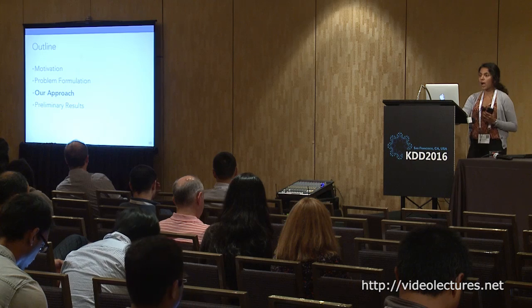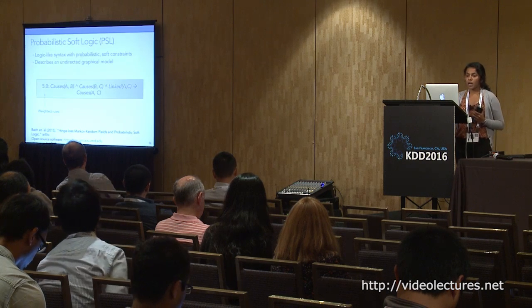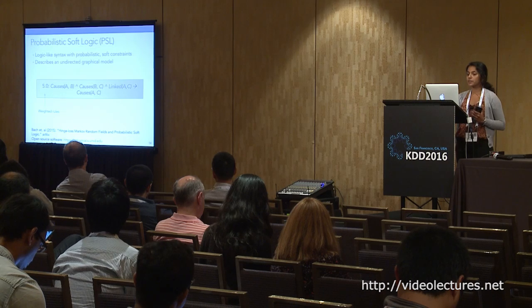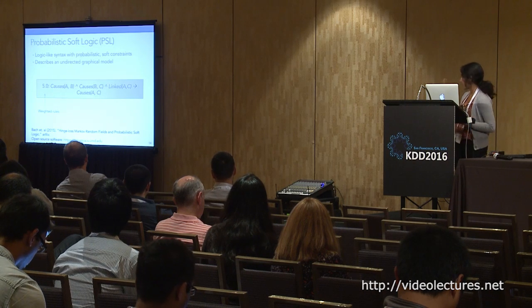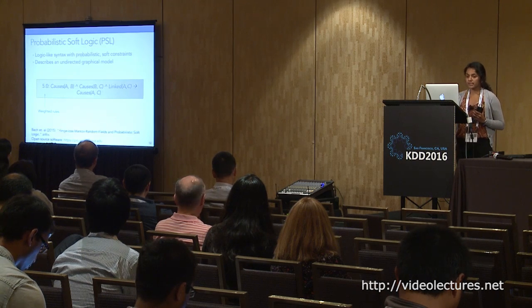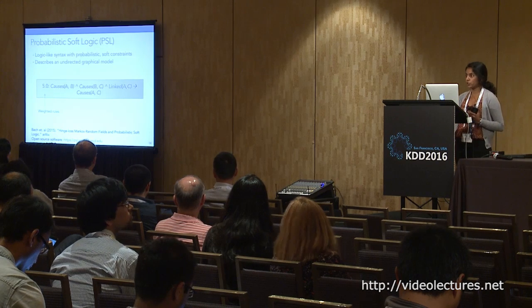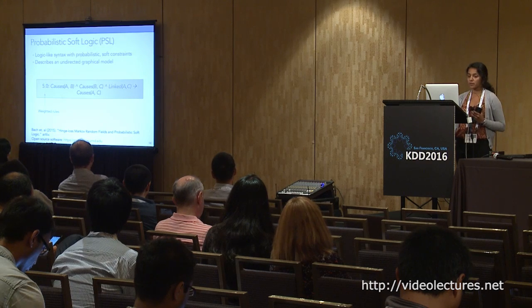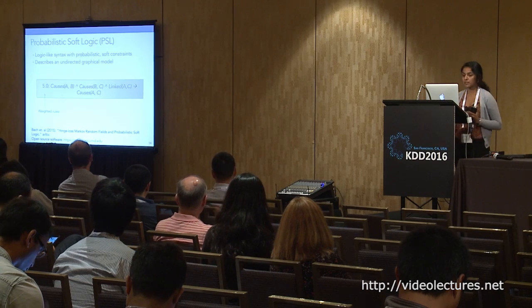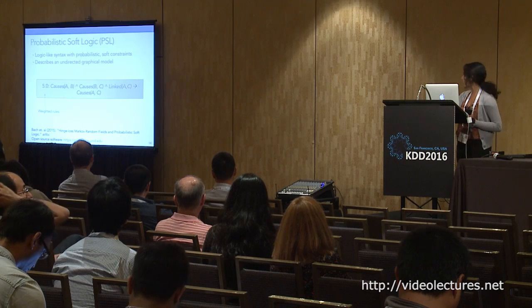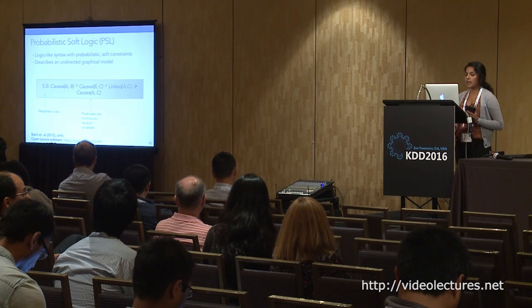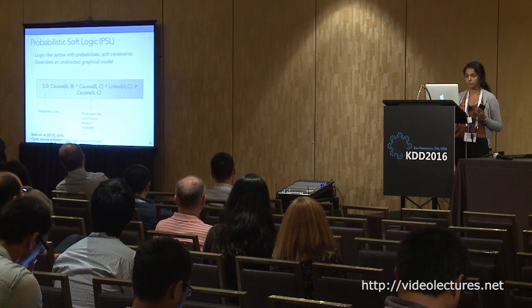I'm using a framework called Probabilistic Soft Logic, or PSL. It's a framework for working with soft probabilistic constraints described using a first-order logic-like syntax. Under the hood, these logical constraints encode a joint distribution over assignments to all the variables in the model, which supports probabilistic reasoning. A PSL model consists of weighted logical rules, where the predicate literals in the clauses represent continuous random variables.